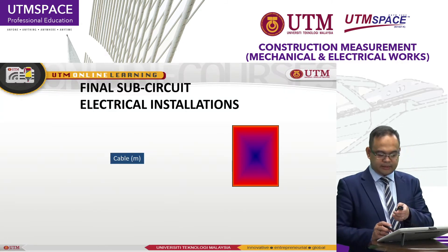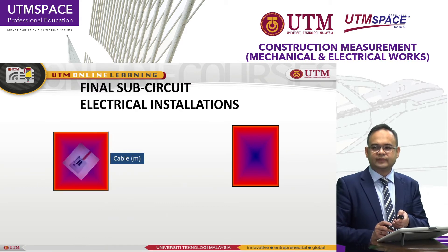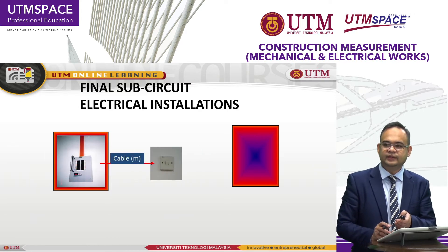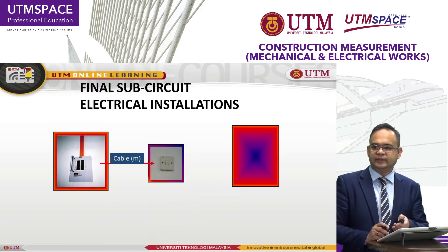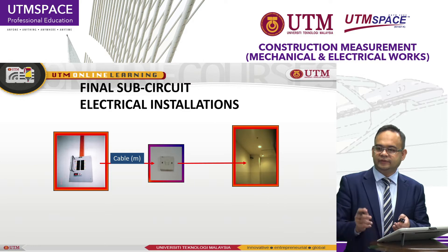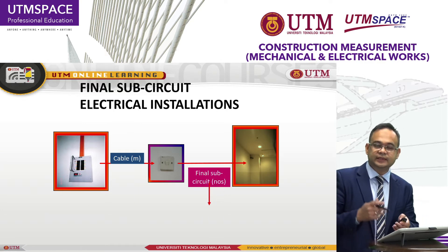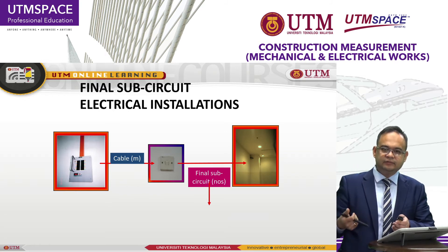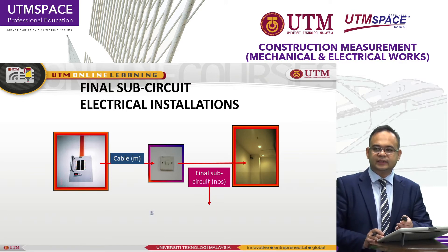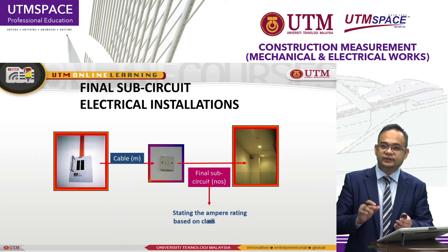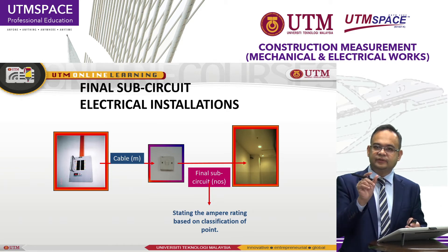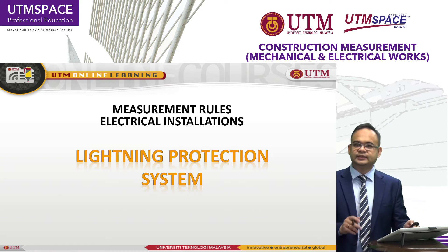This is just an example of the final sub-circuit. Next, I will show you. This is from the DB — you can see here — connected using cable for the supply to the switch, and from the switch to the lighting and also for the ceiling fan. We use what we call final sub-circuit, measured in number. For example, you have two switches: one final sub-circuit number one, one final sub-circuit number two — which is two numbers of final sub-circuit. You need to state the ampere rating, type of supply, and also the size of the cable and all related accessories.